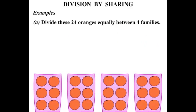So the 24 oranges have been split up. In the first container there we can see there's 6. There's 6 oranges in the next. The next one also has 6 oranges. And finally the 4th one has 6 oranges as well. So we can say that each family gets 6 oranges.